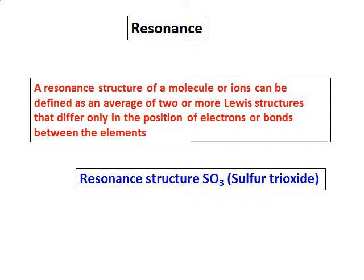We are doing the resonance structure of sulfur trioxide, SO3. A resonance structure is the combination of two or more Lewis structures that differ only in the position of electrons or bonds between the elements.